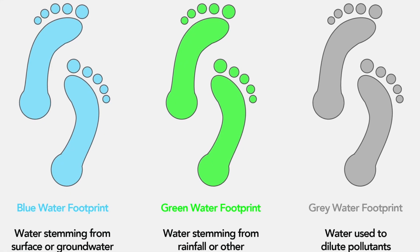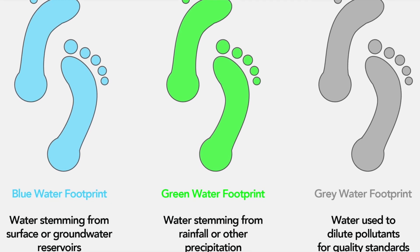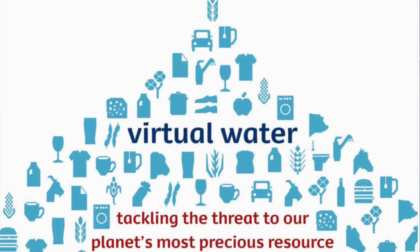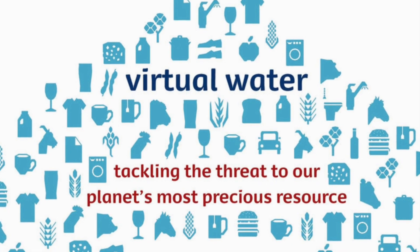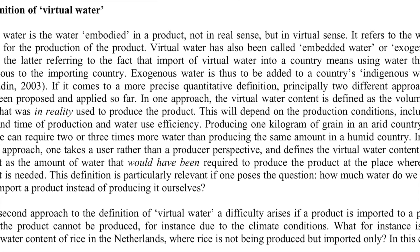We can categorize water into three types: blue water, green water, and grey water. We have a different kind of water which doesn't come in any of these categories, and that is virtual water. Virtual water can be explained as the water content of a product — a commodity, a good, or whatever it is. This virtual water is the amount of actual fresh water used to produce that product at the place where it was actually produced.